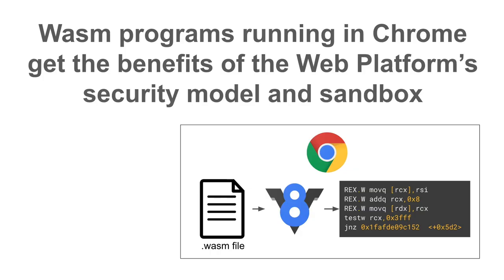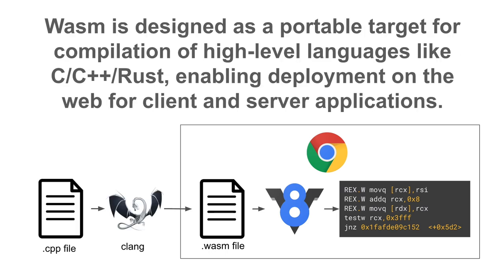When you run a WASM program inside of Chrome, you get this nice translation service to machine language on the target platform, but you also get all the nice benefits of the Chrome sandbox, the security model, and all the things Chrome provides in addition to raw execution. In practice, you start with a C++ file, run it through Clang to generate a WASM file, feed that to V8, and execute it inside Chrome.